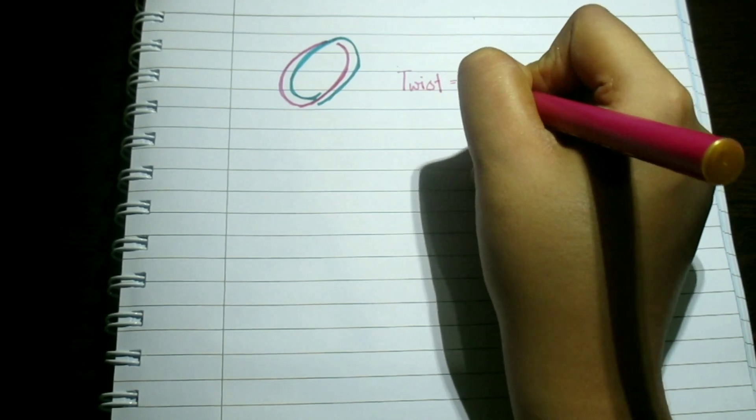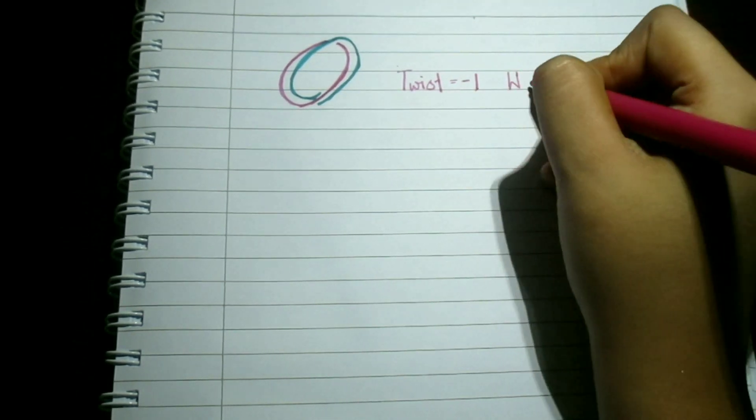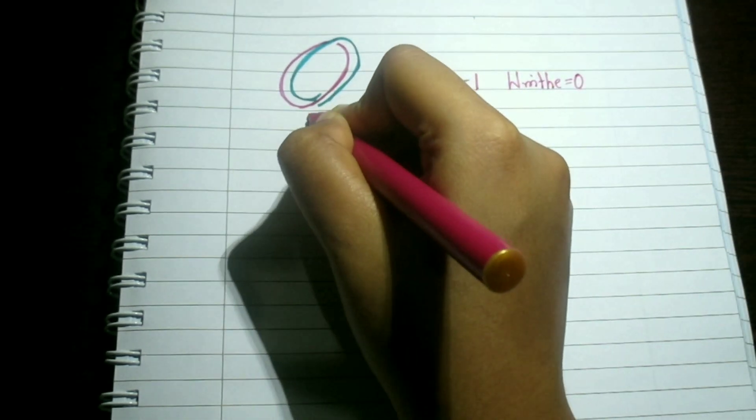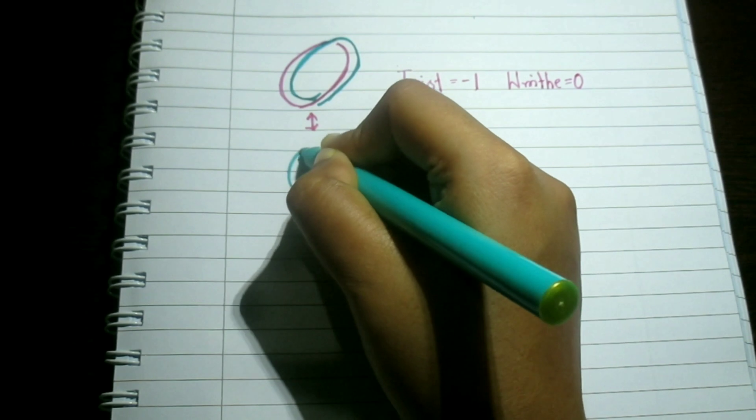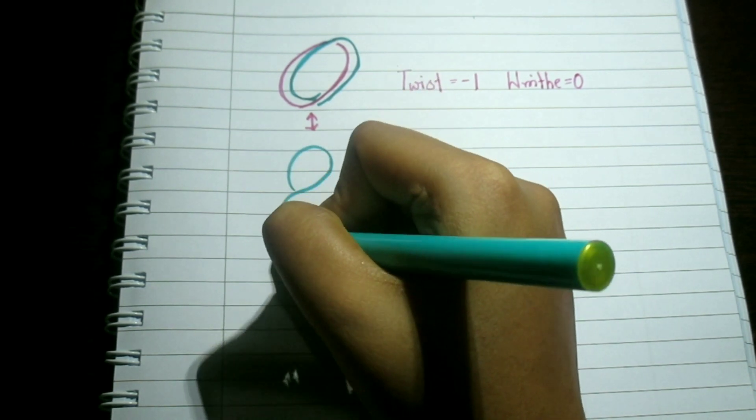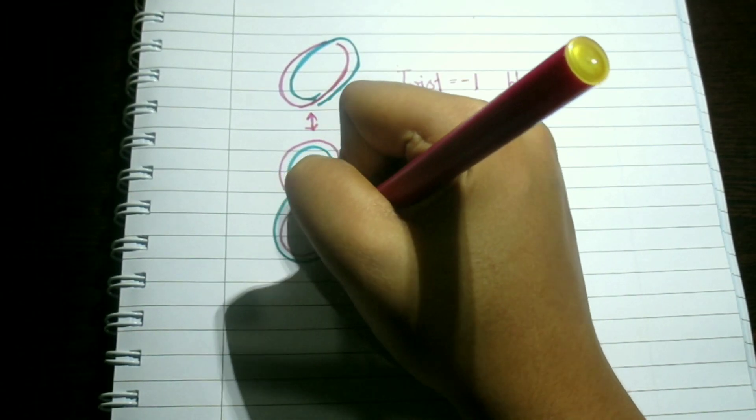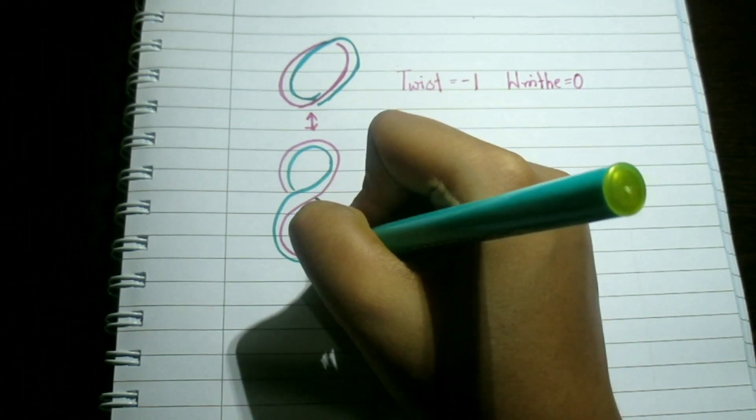Consider a covalently closed circular DNA that is lying flat on a plane. In this flat conformation, the linking number is fully composed of twist. Indeed, the twist can be easily determined by counting the number of times the two strands cross each other. The helical crossovers in a right-handed helix are defined as positive, such that the linking number of DNA will have a positive value.